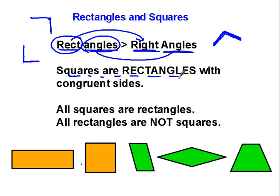Squares are rectangles with congruent sides. A square is a rectangle because it has four right angles. That's what a rectangle is. But a square has each side the same length. So you might think of it as a square rectangle.